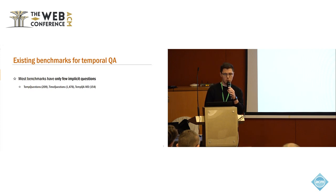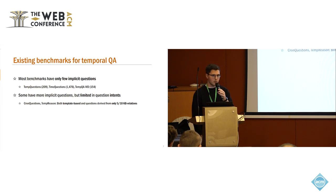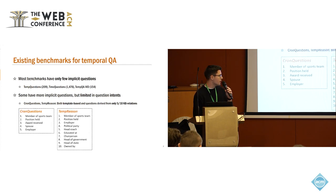So there are a few benchmarks around for temporal QA that have been specifically designed to this end, but they are quite limited with respect to such implicit questions. Namely, for example, temp questions or time questions have only 1,000 or less than 1,000 of these questions. And on the other hand, there are other benchmarks available that have a lot of implicit questions, but these are really limited in question intents. So these, to name two, QA questions and temp reason, these are both template-based. They come from the knowledge graph, and the questions are derived from only 5 to 10 knowledge-based relations.